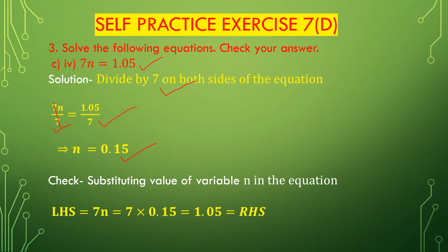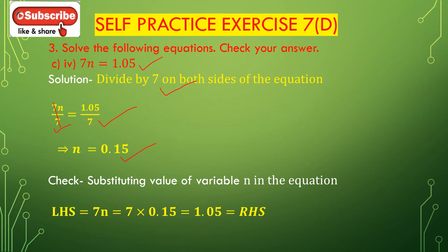Now we check n = 0.15 in this equation, whether left hand side is equal to right hand side. Substituting n = 0.15 on the left hand side: 7n = 7 multiplied with 0.15 = 1.05, which is equal to the right hand side. So n = 0.15 is satisfied in the equation 7n = 1.05. The value for the variable n is 0.15.